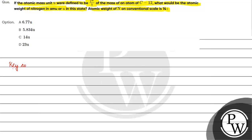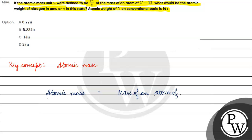The key concept for this question is atomic mass. Atomic mass is basically the mass of an atom of an element — the mass of one atom of any element — with respect to 1/12 of the mass of one atom of carbon-12.